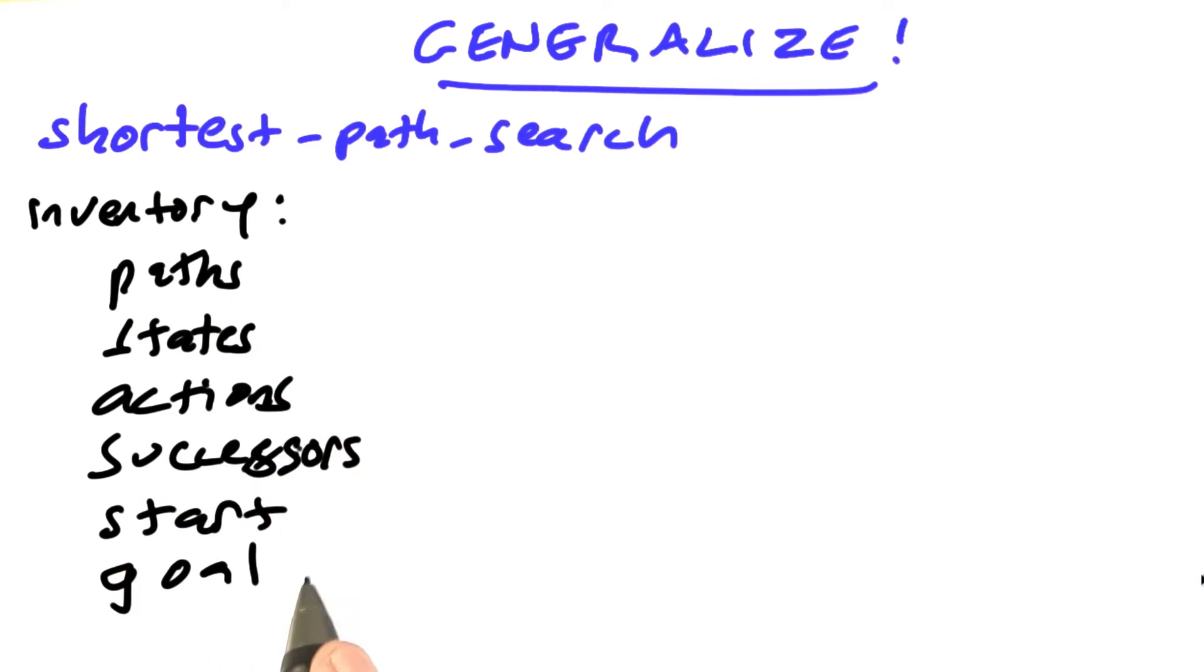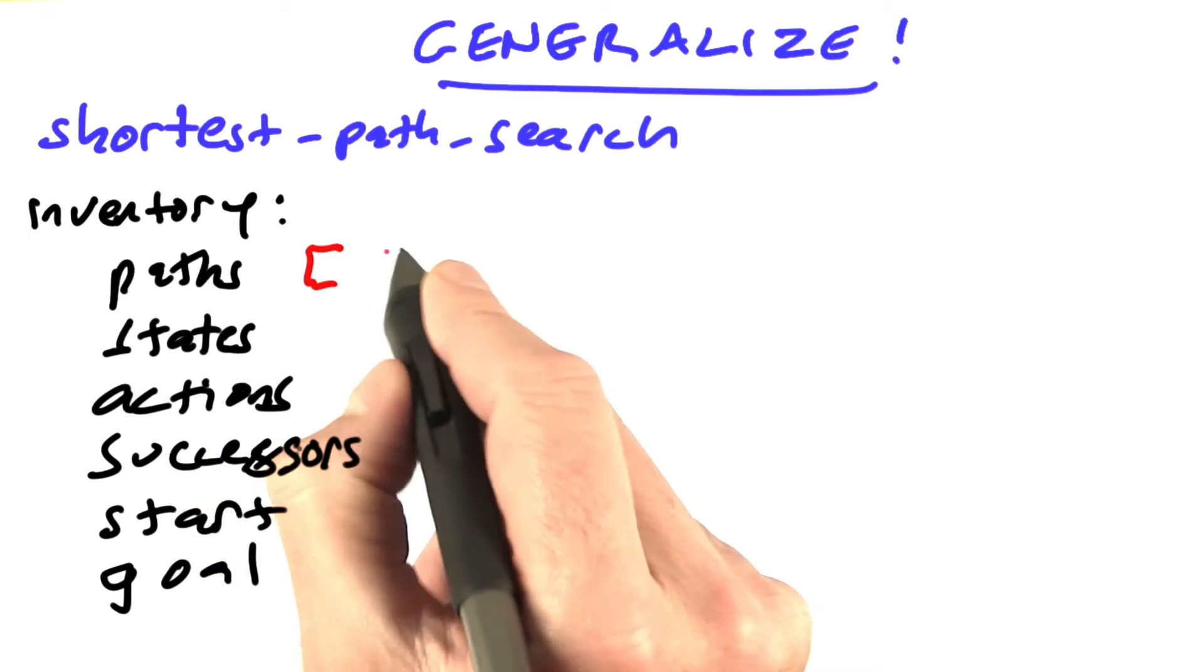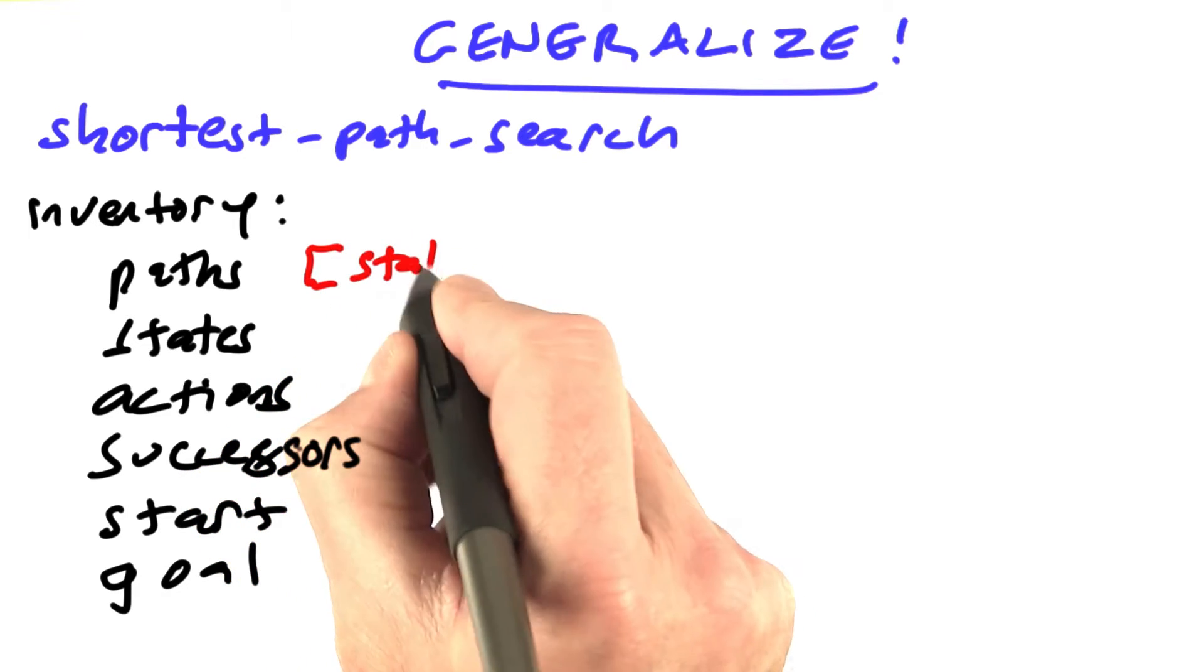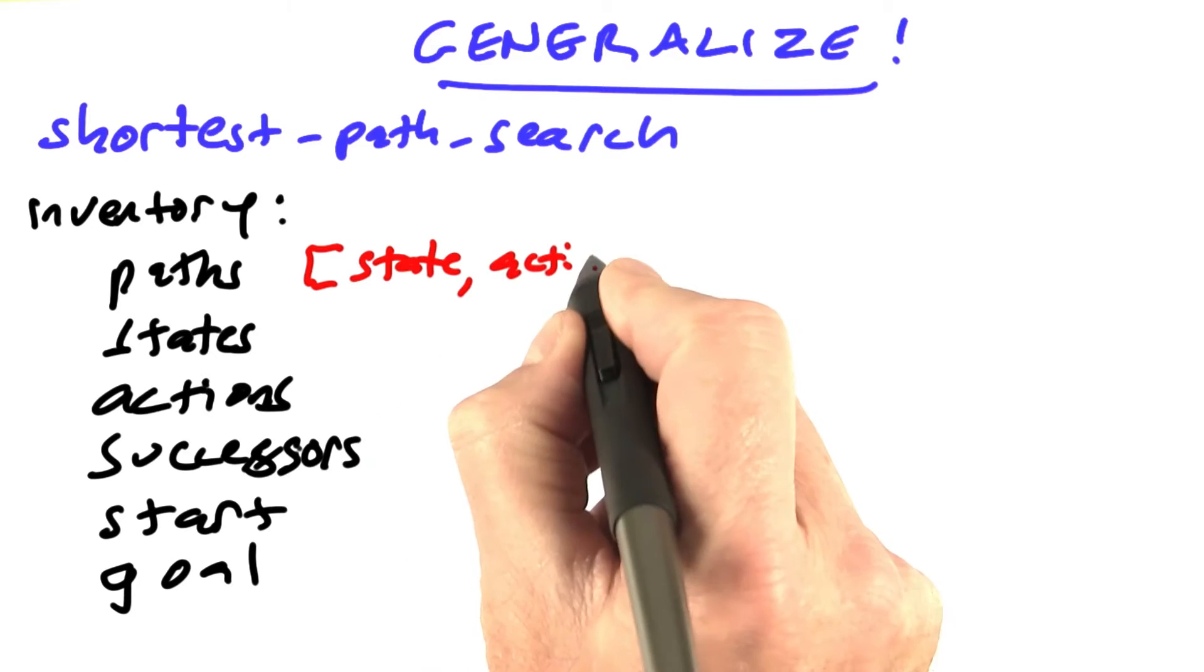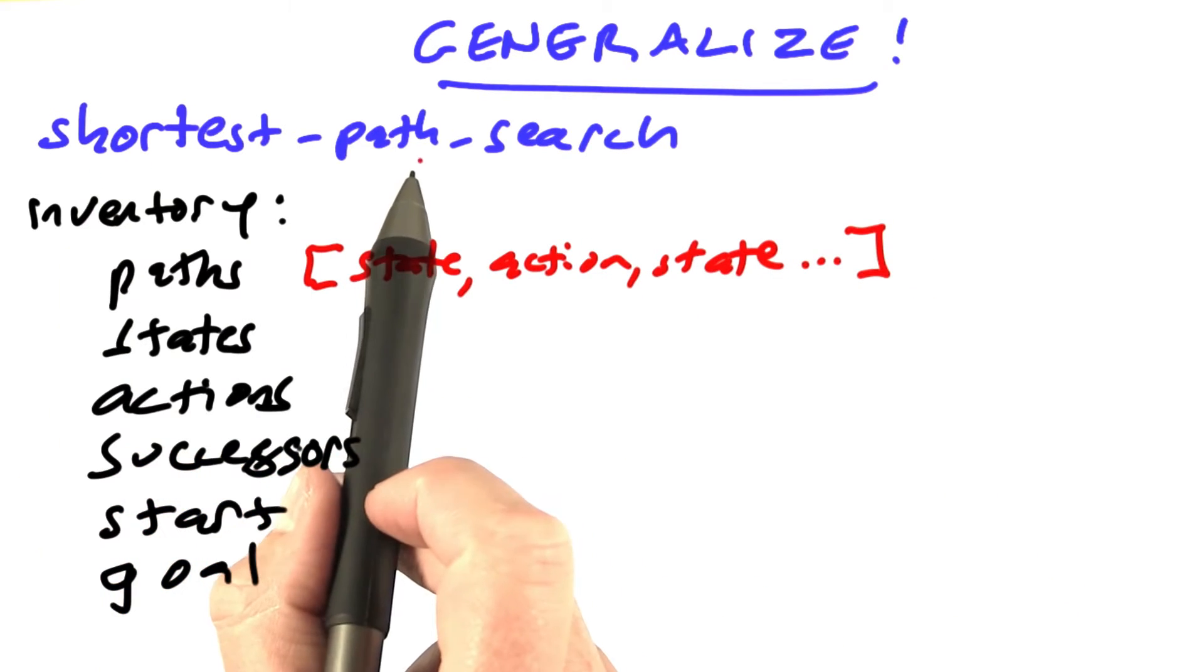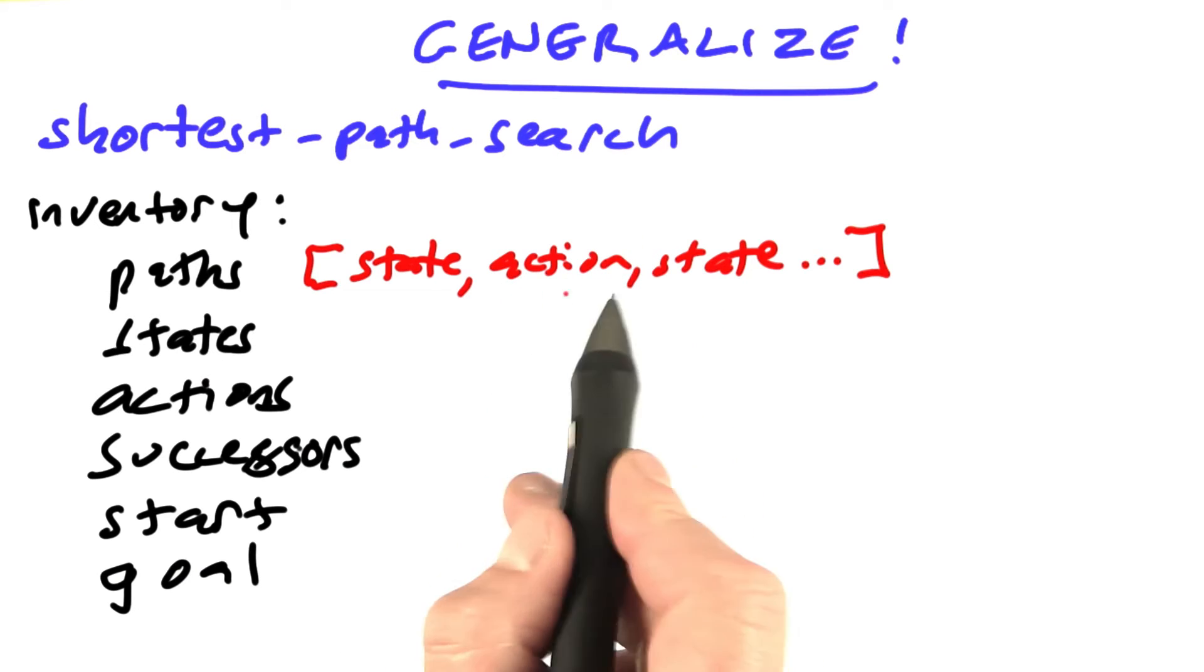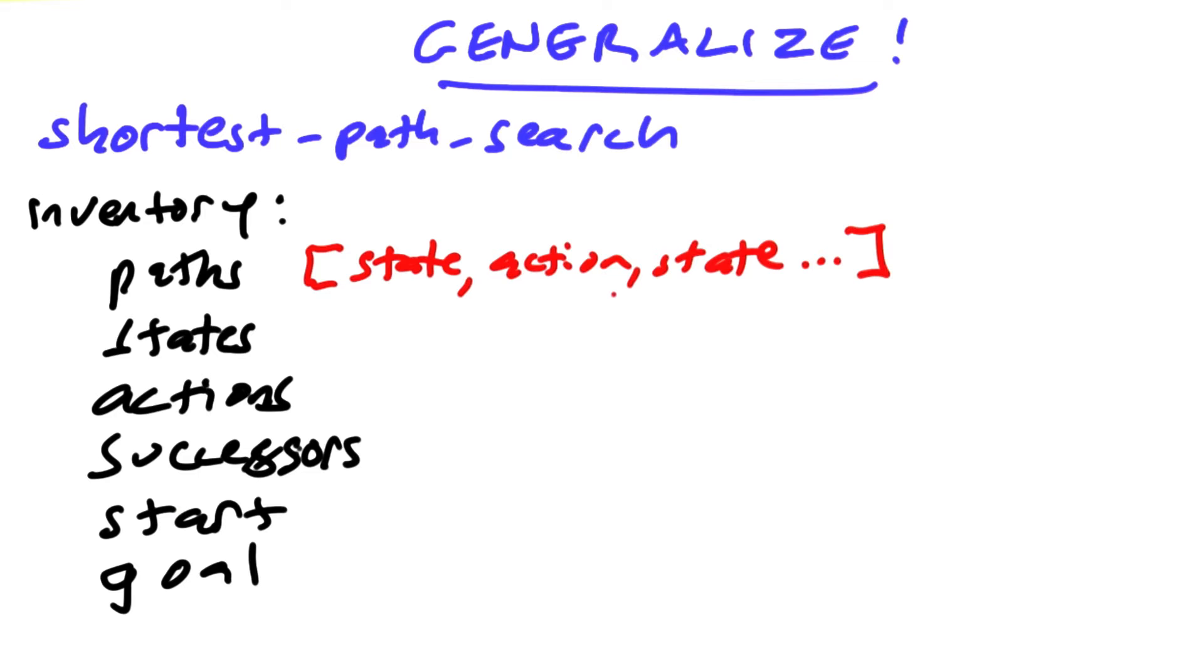Now let's figure out how we're going to represent each of these concepts. Paths, we already had. I don't see any reason to change. We have state, action, state. Notice we're just doing shortest path search. We're not doing best cost search. We don't need to put in the total cost in here. We can just have the action by itself.